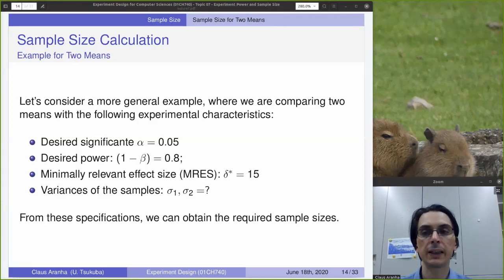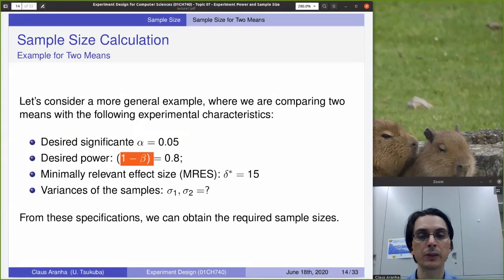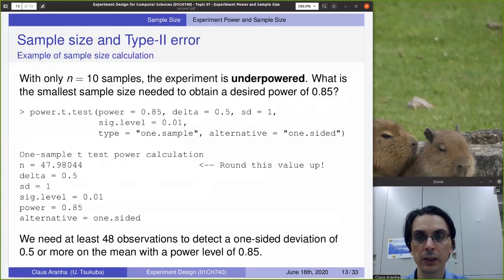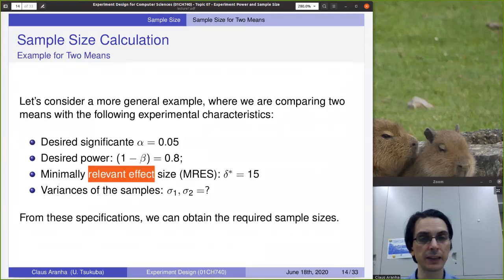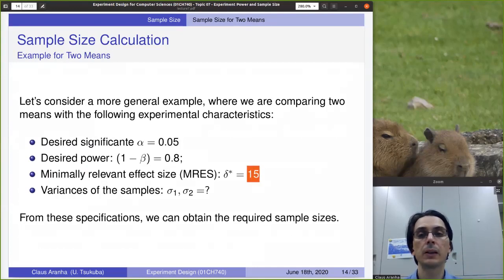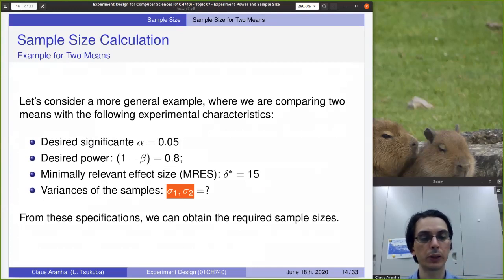In this case, let's assume that we want significance alpha of 0.05 — the traditional value of 95% significance — and we desire a power of one minus beta equal to 0.8. For this experiment, our minimally relevant effect size — the effect size that we are interested in detecting — is 15. But we don't know the variance of the two samples, so how can we obtain the required sample size?